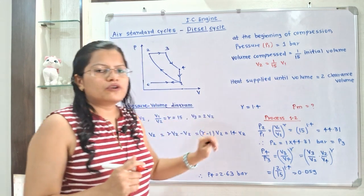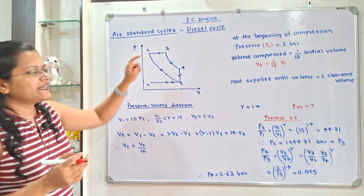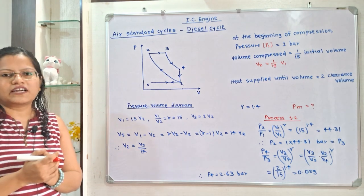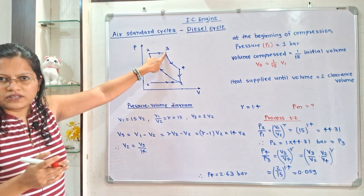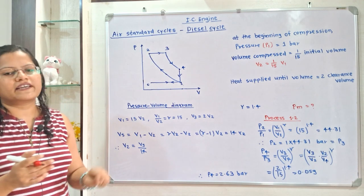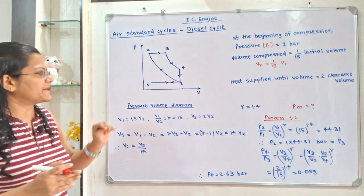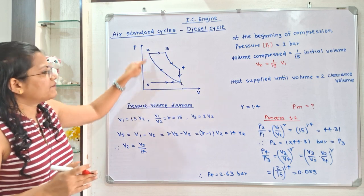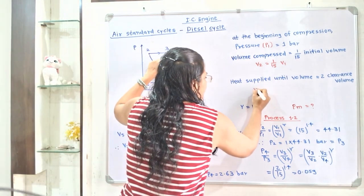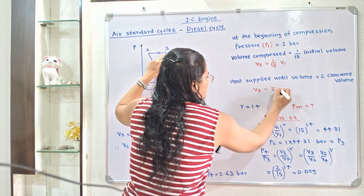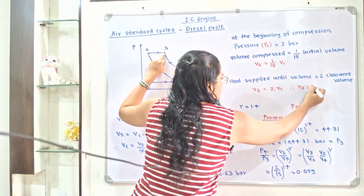Heat is supplied until the volume is equal to twice the clearance volume. Process 2 to 3 is the heat supplied at constant pressure. The clearance volume is V2, so V2 = Vc. From this statement and with the help of the diagram, V3 is equal to twice the clearance volume, that is V3 = 2Vc = 2V2.